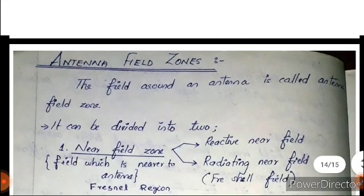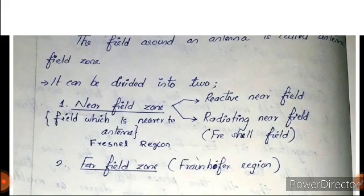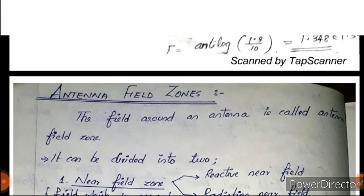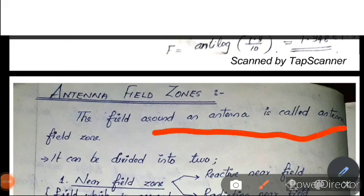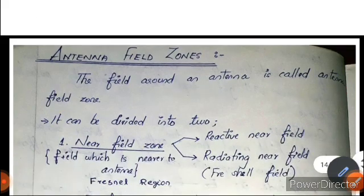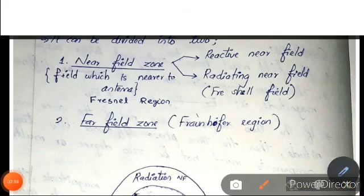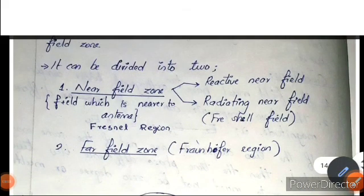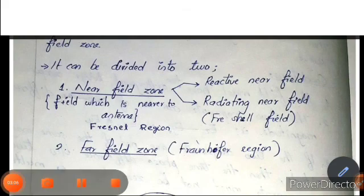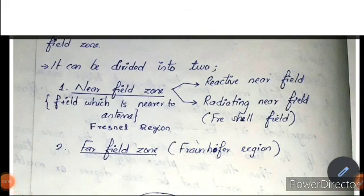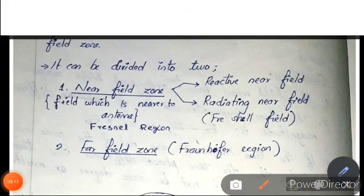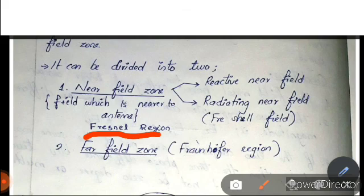This is another topic in the first module: the field zones. The field around an antenna is called an antenna field zone. We divide this field zone into two: one is the near field zone and the other is the far field zone. The near field zone is nearer to the antenna and is also called the Fresnel region.